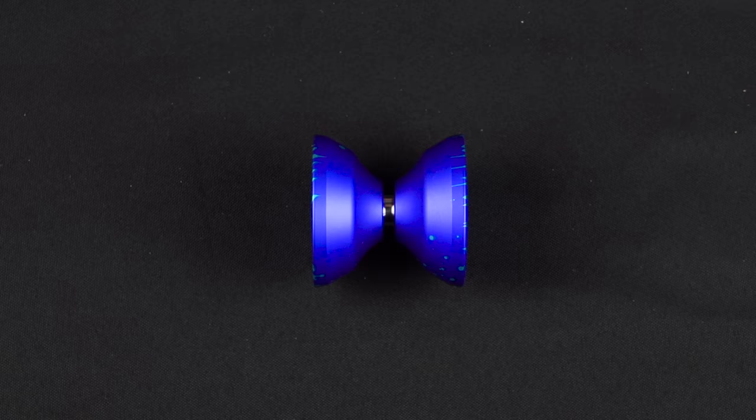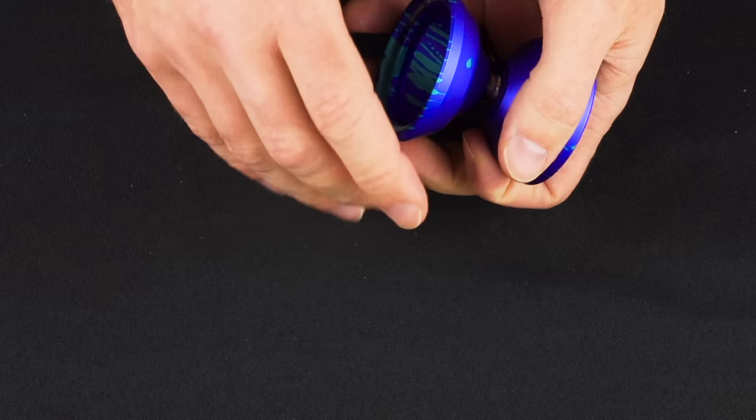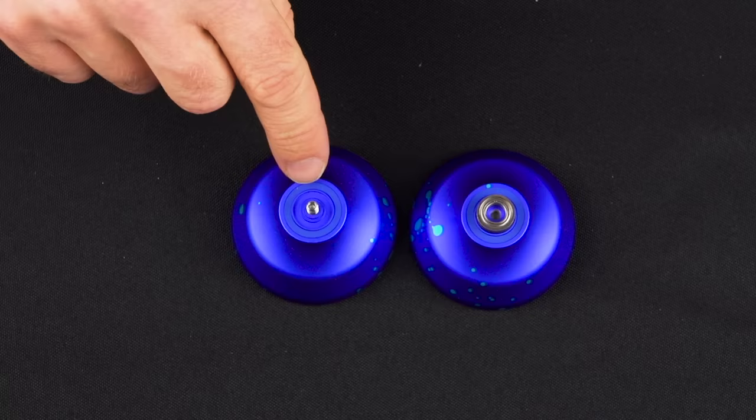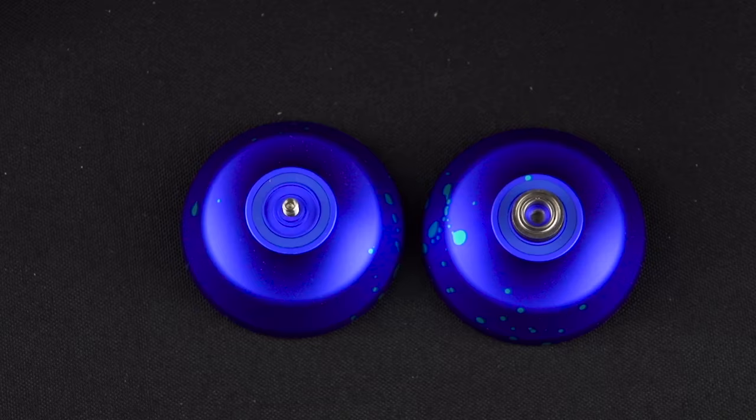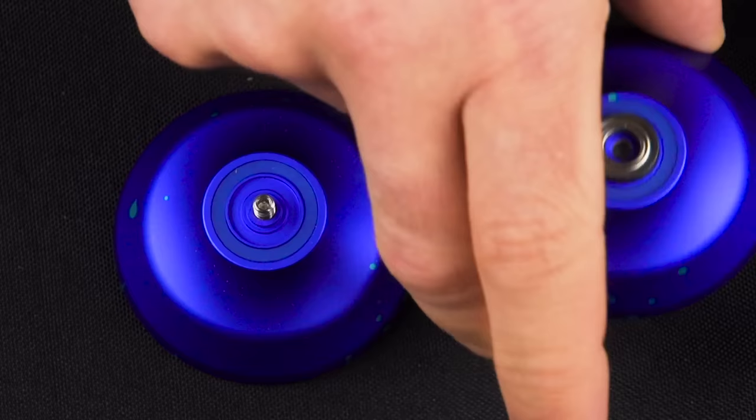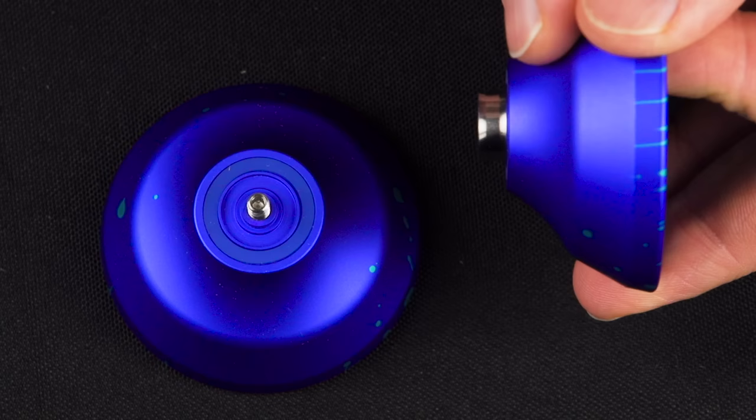So when you get your Atlas and you take it apart, we were able to put the pieces in it that we really like to have in yo-yos. First of all, we put in the blue response pads, which are a little bit grippier than your standard response pads, and we really like that both for 5A and for 1A, because you get tighter binds using those, and those response pads also last a long time. We also fitted it with a center track bearing, which again is great for all the different types of advanced tricks that you would want to do with an Atlas.